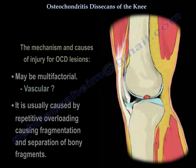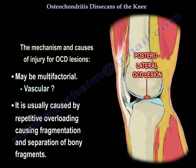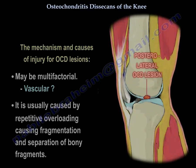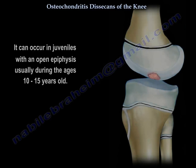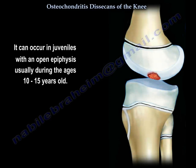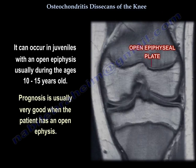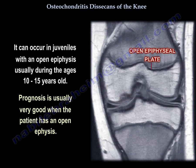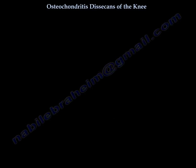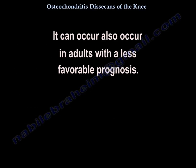The mechanism and causes of OCD lesions may be multifactorial, possibly vascular, and are usually caused by repetitive overloading, causing fragmentation and separation of bony fragments. It can occur in juveniles with open epiphysis, typically between ages 10 to 15, where the prognosis is very good. It can also occur in adults with a less favorable prognosis.